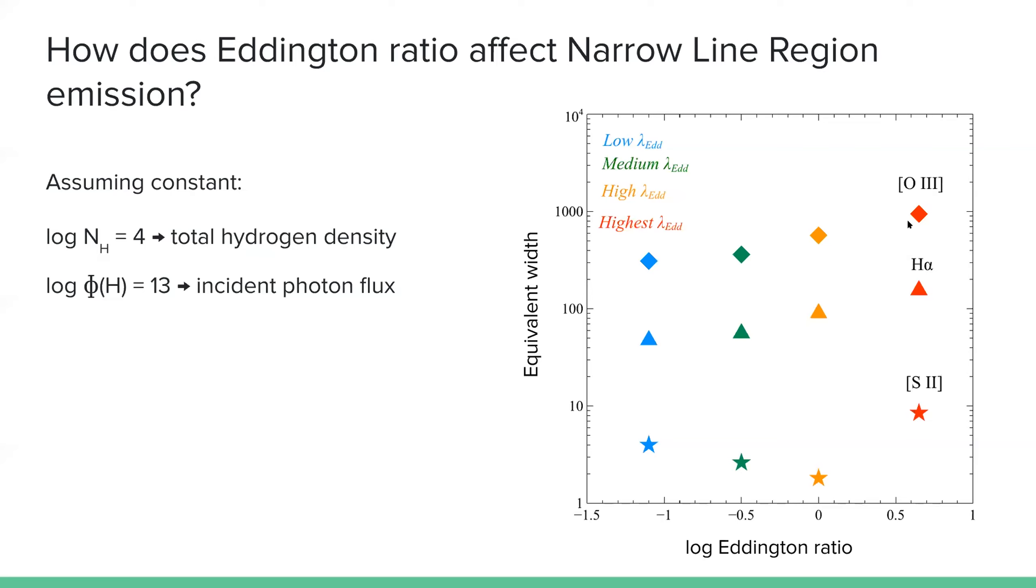It seems that for the O3 and H alpha equivalent width, it's increasing with the increase of the Eddington ratio.